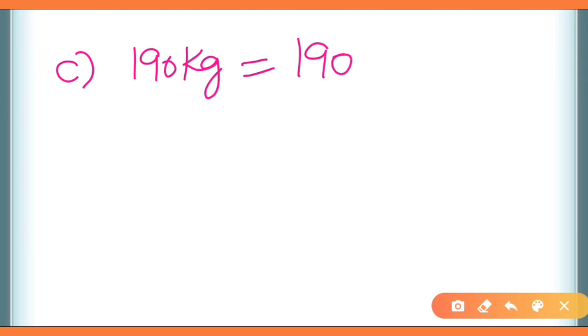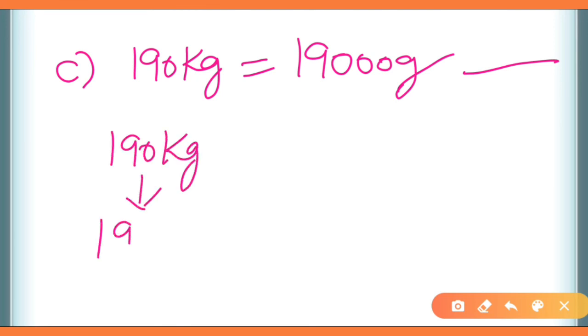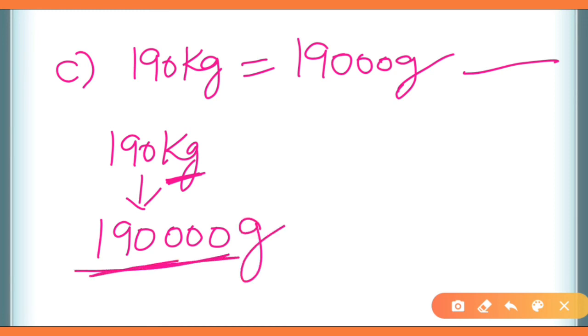Part C: 190 kilogram को grams में convert करने पर answer 1,90,000 grams (यानी 4 zeros) आता है। लेकिन statement में केवल 3 zeros हैं — जो गलत है। Answer: False। In this way you will complete question number 3 of worksheet number 1 of unit 6.